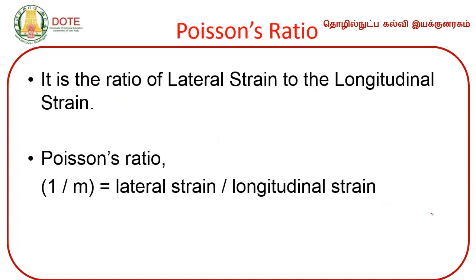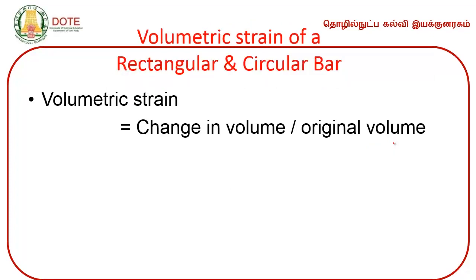Poisson's ratio is the ratio of lateral strain to longitudinal strain. We denote Poisson's ratio using the symbol 1/m. Volumetric strain is the ratio of change in volume to the original volume.